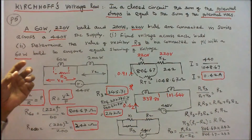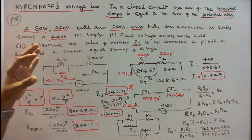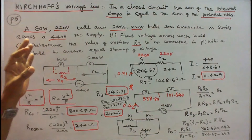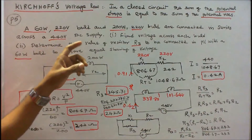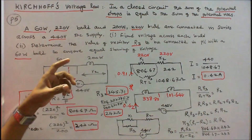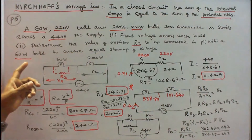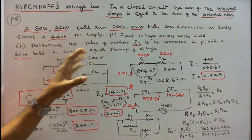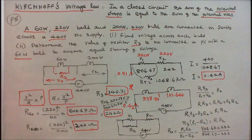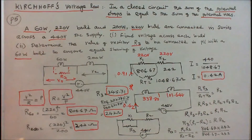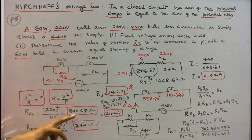Problem number 5: A 60W 220V bulb and a 200W 220V bulb are connected in series across a 440V DC supply. Find the voltage across each bulb. We know that P = V²/R. The resistance of the 60W bulb is 220² / 60 = 806.67 ohms.